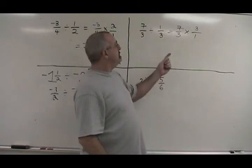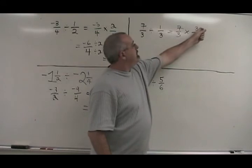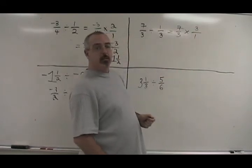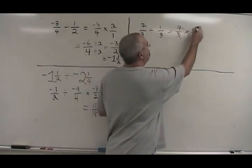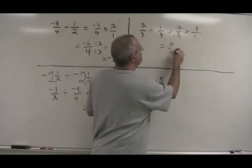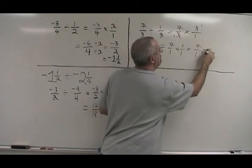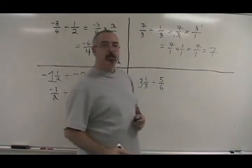If we like to do cancelling when we work with fractions, this 3 and this 3, one is on the top, one is on the bottom. We're allowed to cancel them. They each become a 1. You have 7 over 1 times 1 over 1 equals 7 over 1 equals 7. The answer is 7.